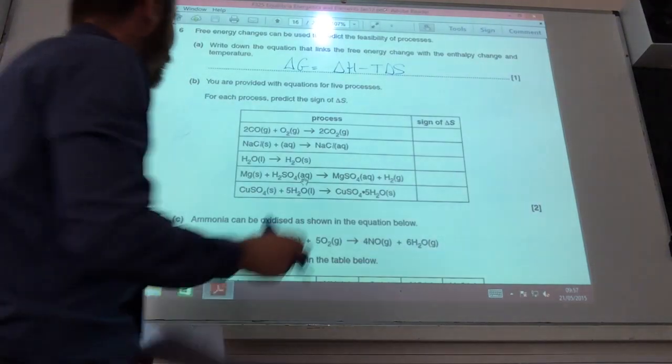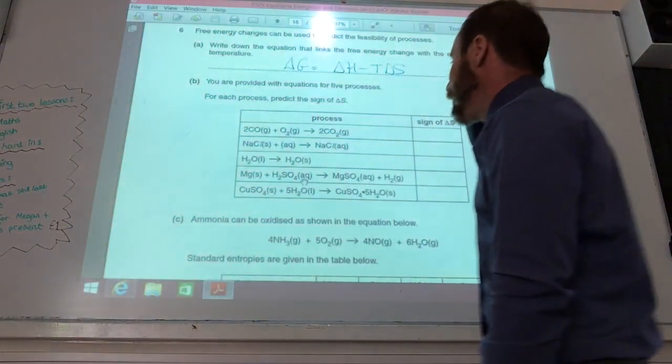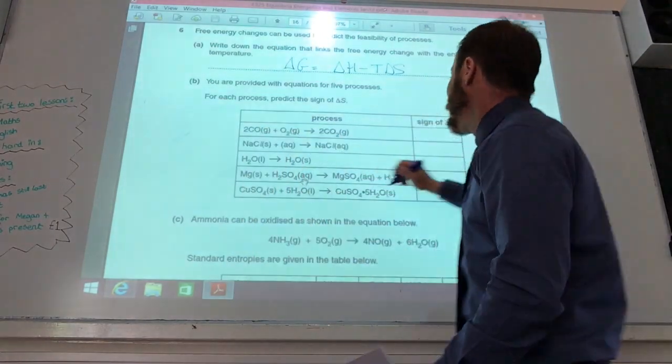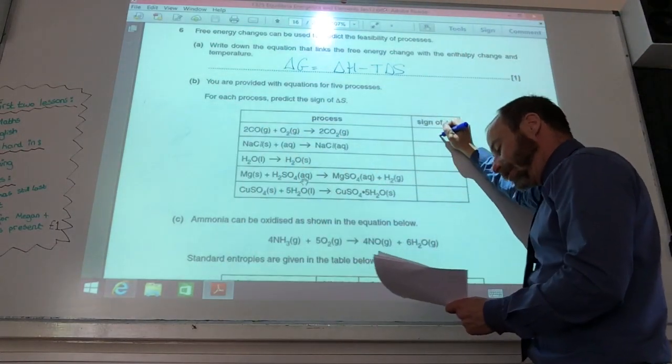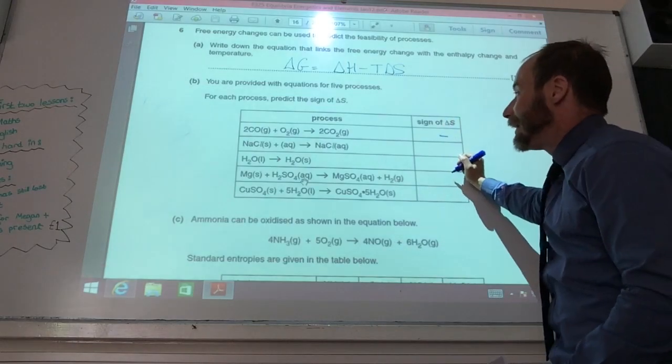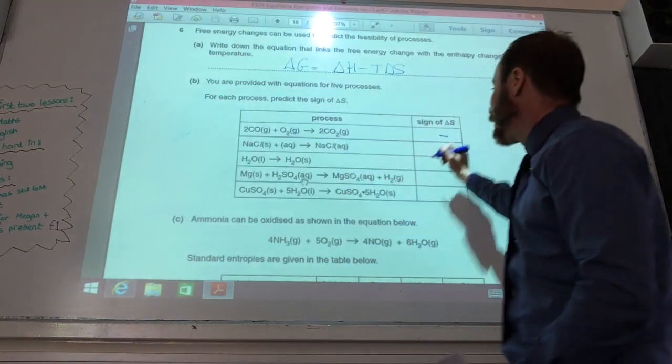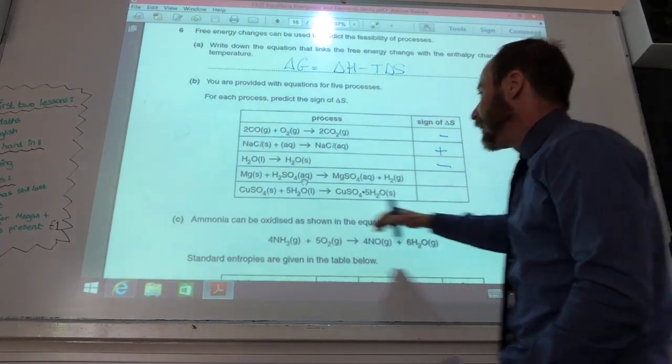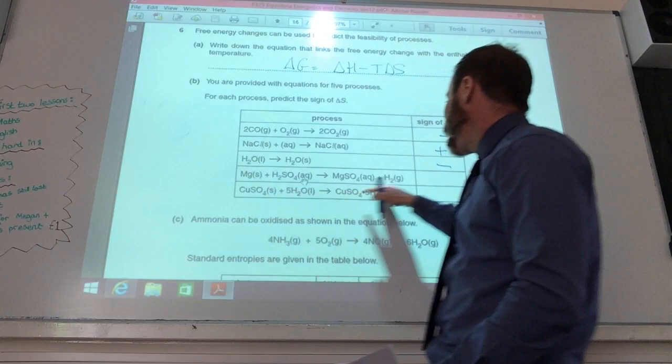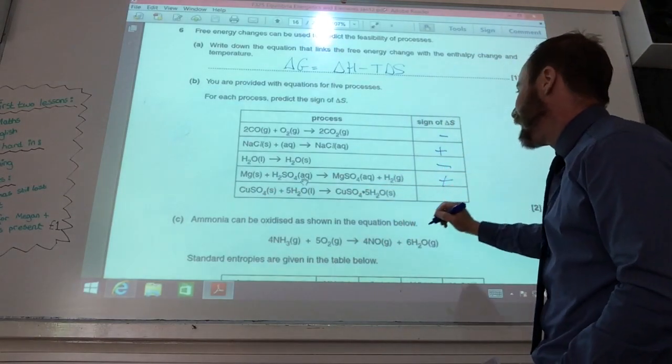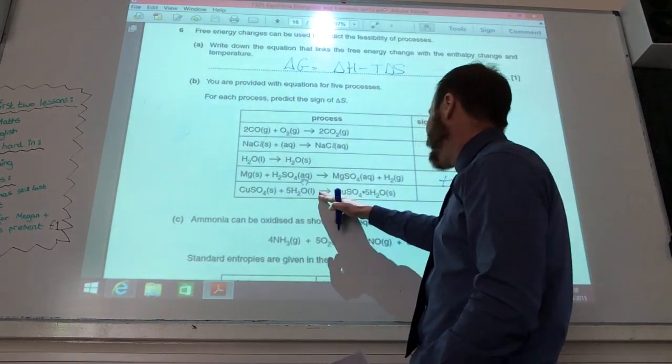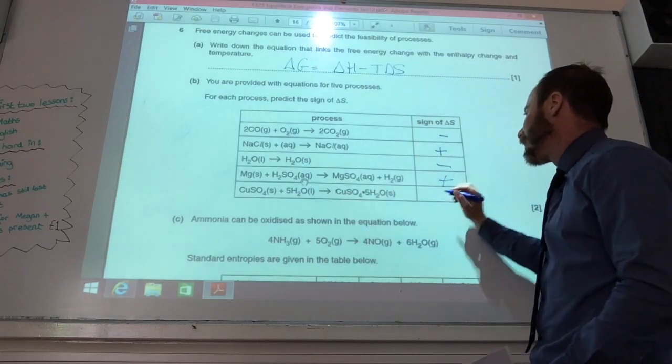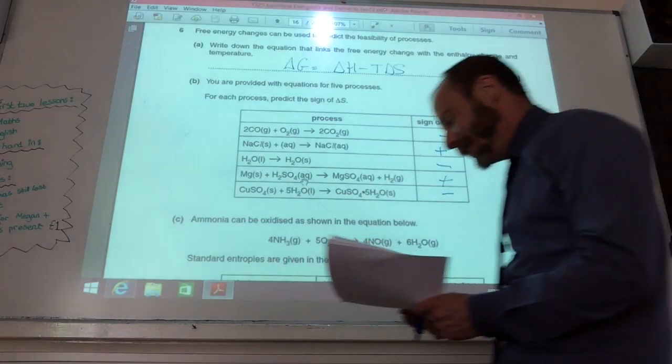Let's have a look at the sign of delta S. Is entropy increasing or decreasing? Well, with this one, three gas becoming two means it is decreasing, so it's negative. This one, a solid becoming a solution, increasing, so it's positive. Liquid becoming a solid, decreasing. I'm forming a gas here, that's the important one, so it's increasing. And this one, I've got a solid liquid becoming one substance, and therefore it is decreasing.